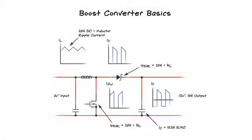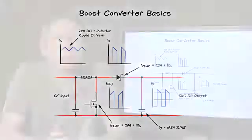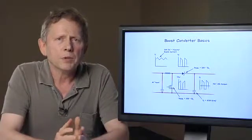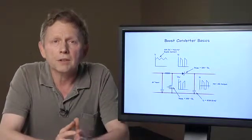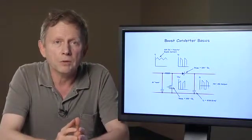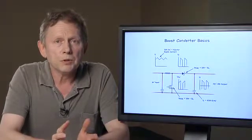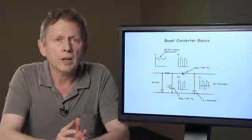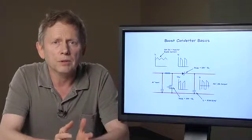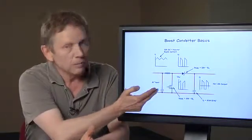In this example, we are boosting 6V input to 12V at 10A output. To meet the 10A output requirement, the input current, power switch current and output rectifier current will have a peak over 20A. Our Boost Converter example has only 1.9A of RMS input ripple current, which is easy to filter with a small input cap.